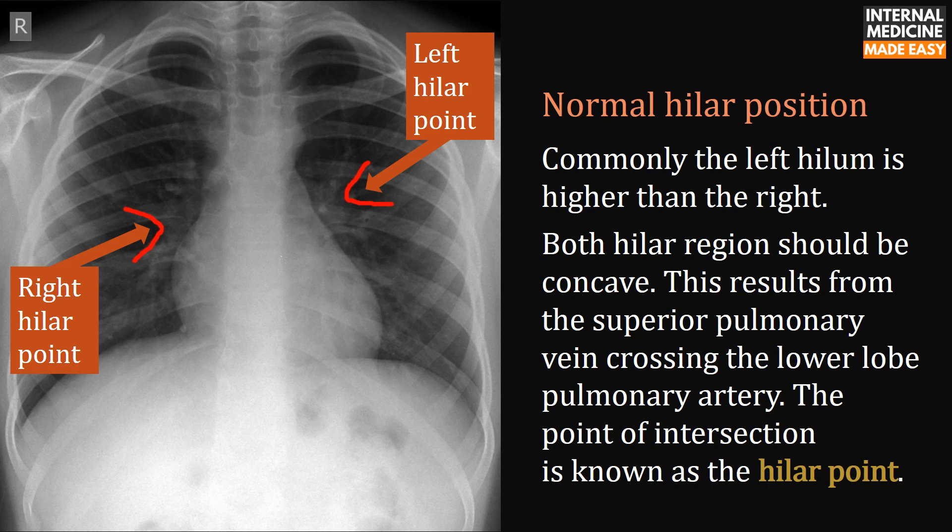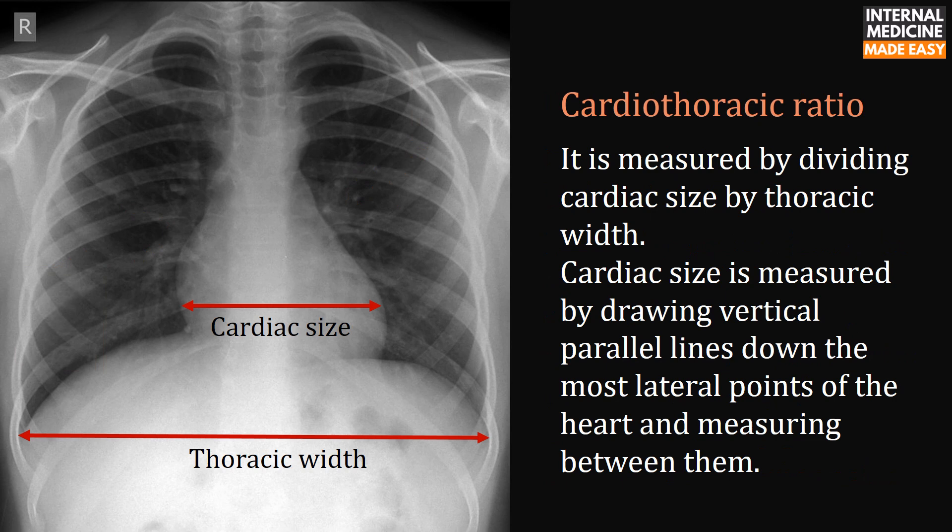Regarding normal hilar position: commonly the left hilum is higher than the right. Both hilar regions should be concave. This results from the superior pulmonary vein crossing the lower lobe pulmonary artery — the point of intersection is known as the hilar point.